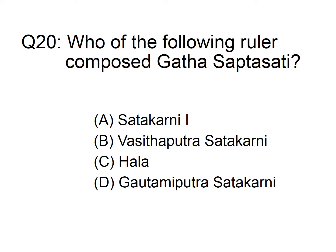Which Satavahana ruler wrote Sattasai? Option A: Satakarni I, B: Vashishtaputra Satakarni, C: Hala, D: Gautamiputra Satakarni. The answer is option C, Hala. He was the 17th ruler of the Satavahana dynasty.